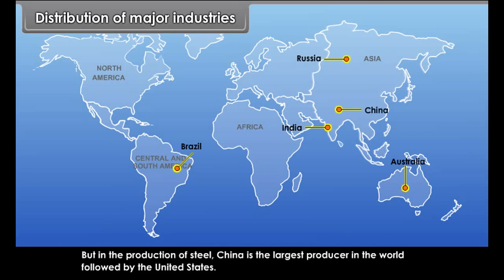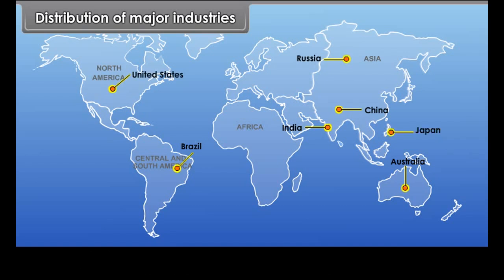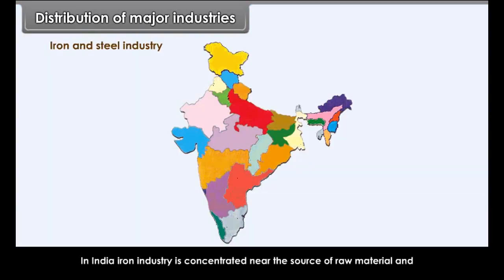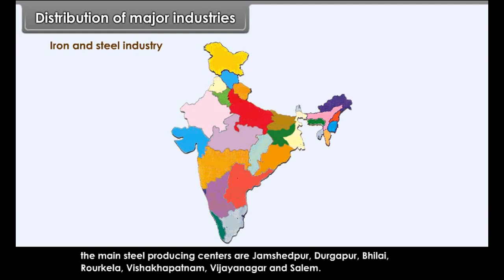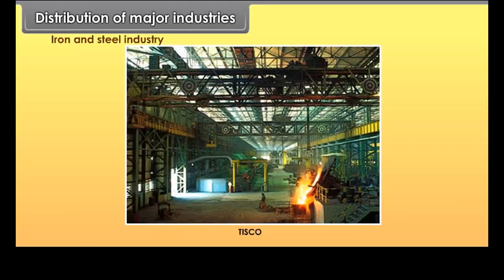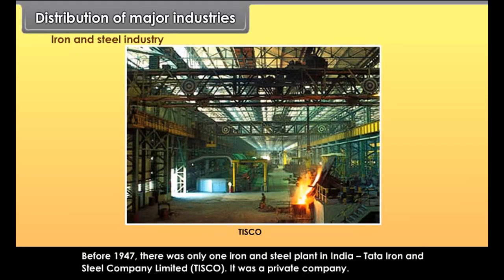The largest iron ore reserves are found in Russia, Brazil, Australia, and India. In the production of steel, China is the largest producer, followed by the United States. Japan, India, Russia, Germany, South Korea, Brazil, Mexico, Canada, and the United Kingdom are other important steel producers. In India, iron industry is concentrated near the source of raw material, with main steel-producing centres at Jamshedpur, Durgapur, Bhilai, Rourkela, Vishakhapatnam, Vijayanagar, and Salem.